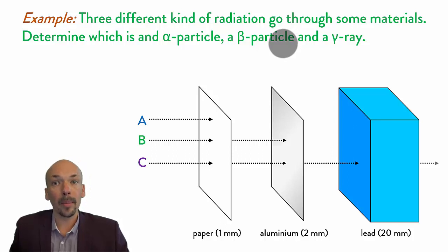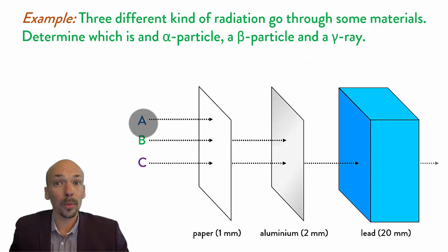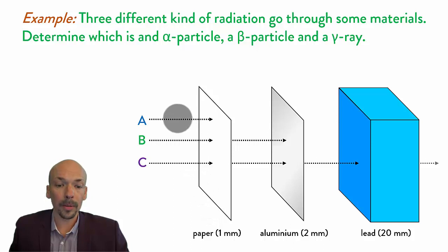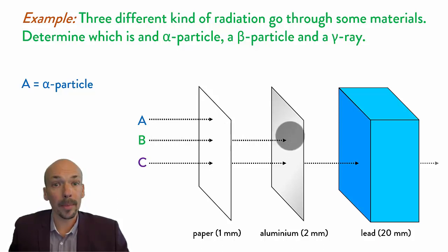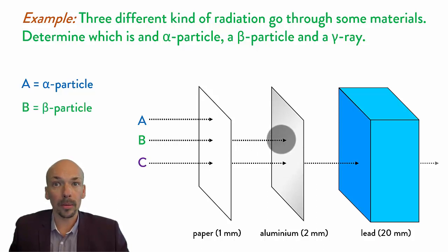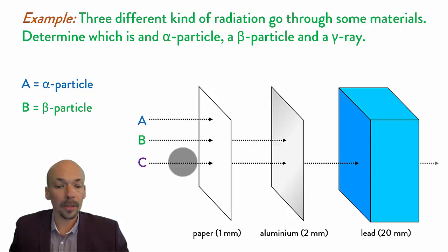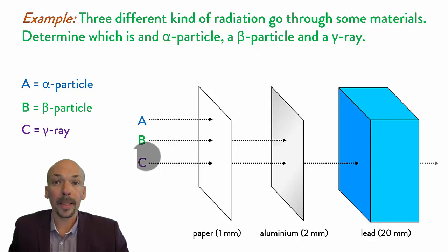Try this now for yourself and pause the video. The first one does not go through a piece of paper of 1 mm while the other two do, so this one is the least penetrating of the three — this is an alpha particle. The next one goes through the paper but is stopped by aluminum, while the last one goes through aluminum. So the one stopped by aluminum is a beta particle — it's more penetrating than the alpha particle but not as penetrating as the last one. The last one is a gamma ray.